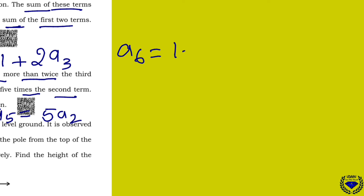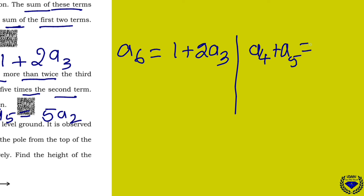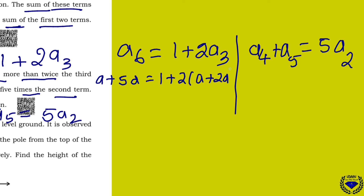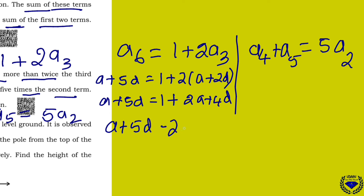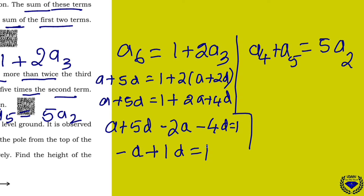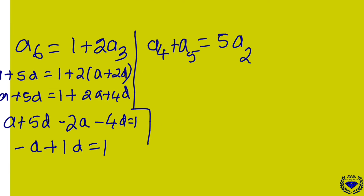A6 = 1 more than twice the 3rd term gives equation 1. Writing it out: A plus 5D = 1 plus 2(A plus 2D), which gives A plus 5D = 1 plus 2A plus 4D. Rearranging: minus A plus D = 1.